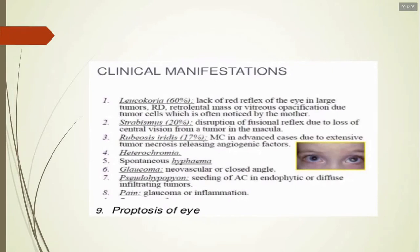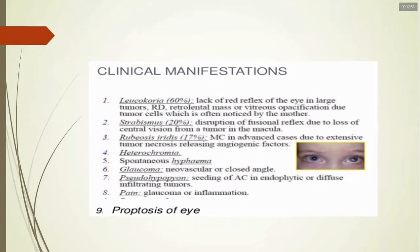Rubeosis iridis — new vessels on the iris — is present in 70% of cases and is seen in the extensive stage. Heterochromia is a difference in iris color. Spontaneous hyphema (blood in the anterior chamber), glaucoma (neovascular or angle-closure), and pseudohypopion — pus-like material in the anterior chamber due to tumor cell seeding from endophytic or diffuse infiltrating tumors — can also occur. Pain from glaucoma and inflammation, and proptosis, may also be seen. These are important clinical features for your exam.